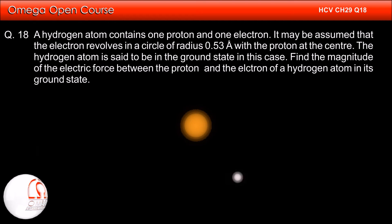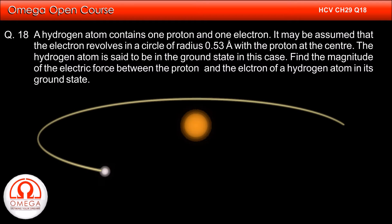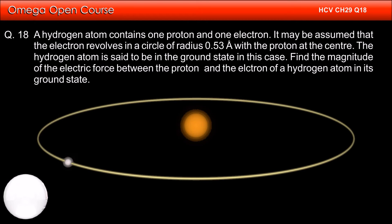A hydrogen atom contains one proton and one electron. It may be assumed that the electron revolves in a circle of radius 0.53 Angstrom with the proton at the center. The hydrogen atom is said to be in the ground state in this case. Find the magnitude of the electric force between the proton and the electron of a hydrogen atom in its ground state.